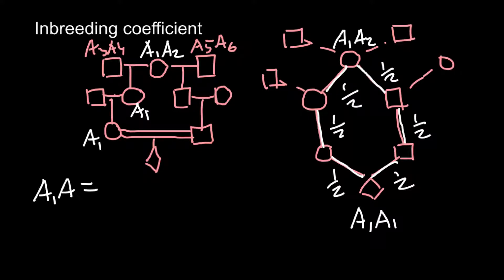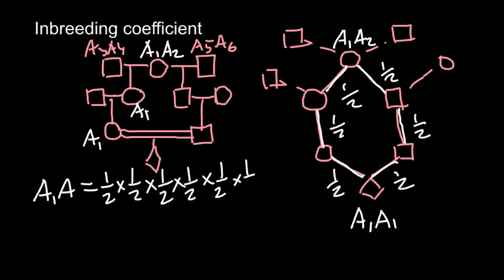To find the probability for the progeny to be A1A1, we multiply all these independent probabilities together. There are six steps in the chain, so we multiply one half by itself six times: 2×2=4, ×2=8, ×2=16, ×2=32, ×2=64. So we get a probability of 1 out of 64.